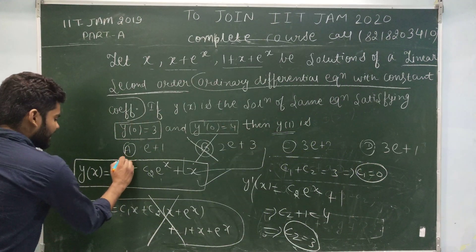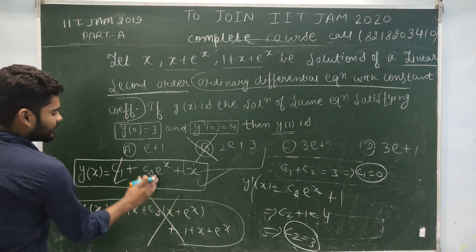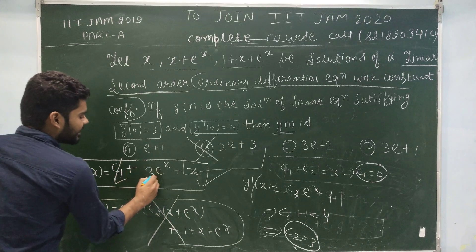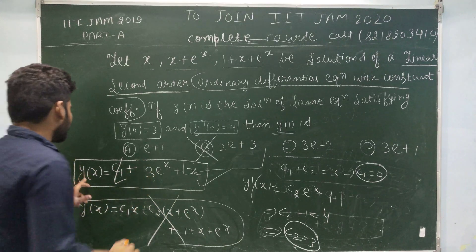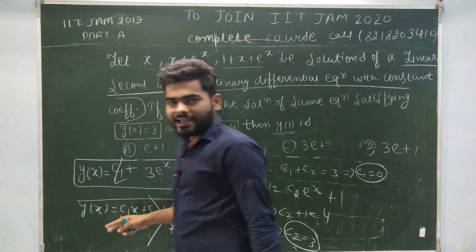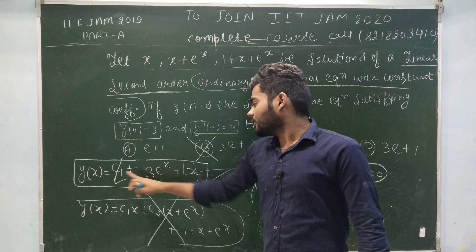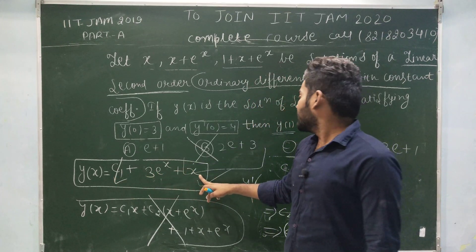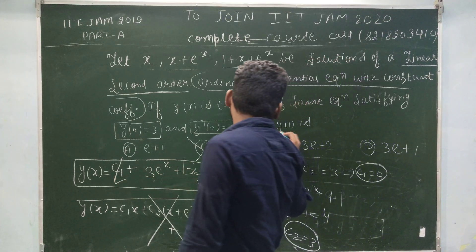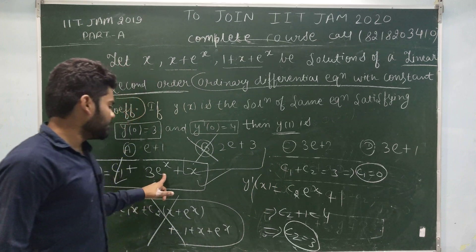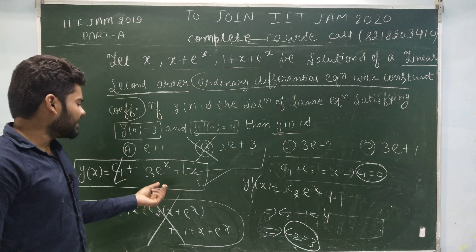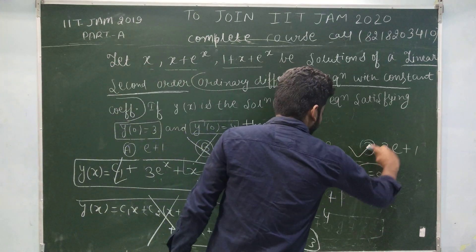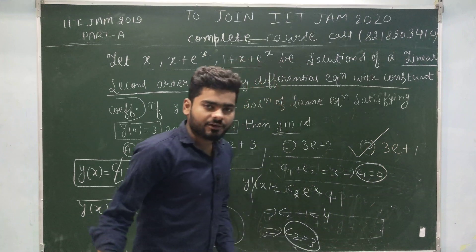Since c₁ = 0, that term cancels, and c₂ = 3. So the solution is y(x) = 3e^x + x. The value of y(1) is obtained by putting x = 1, giving y(1) = 3e + 1. The correct option is D. Thank you, friends.